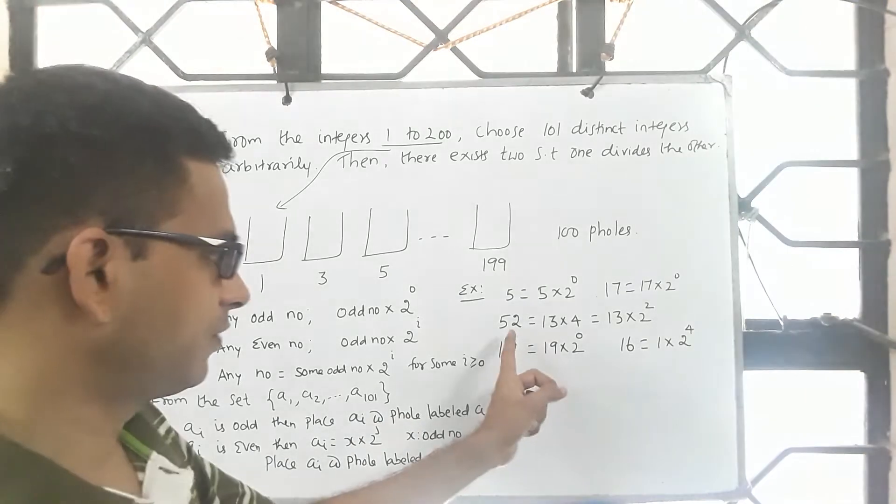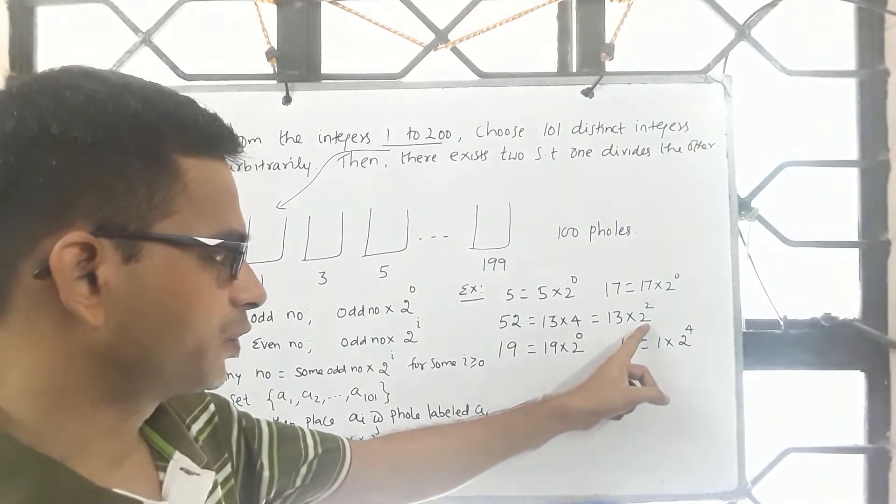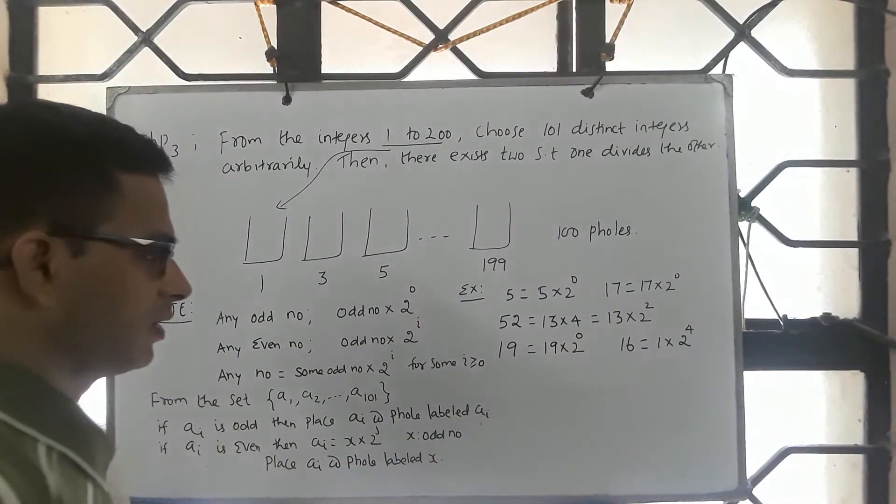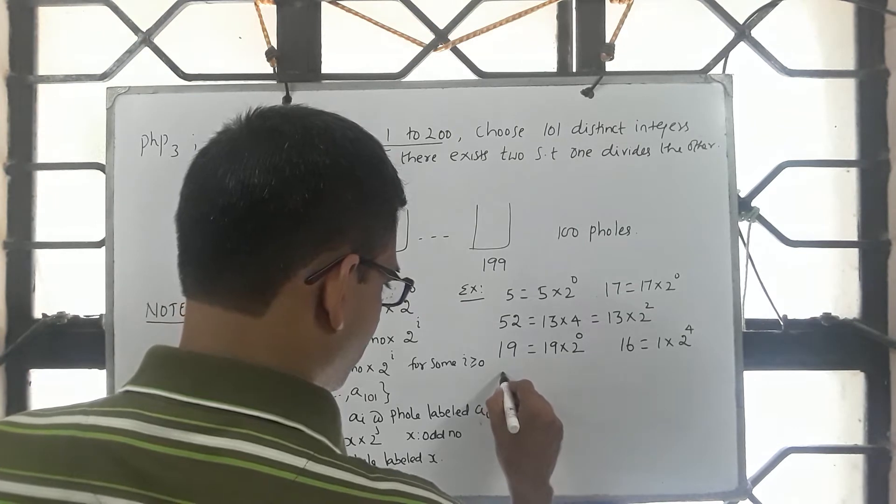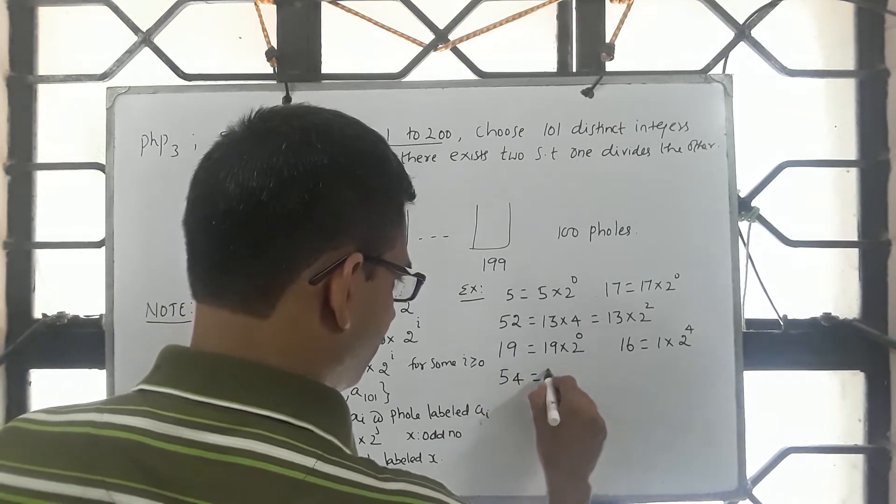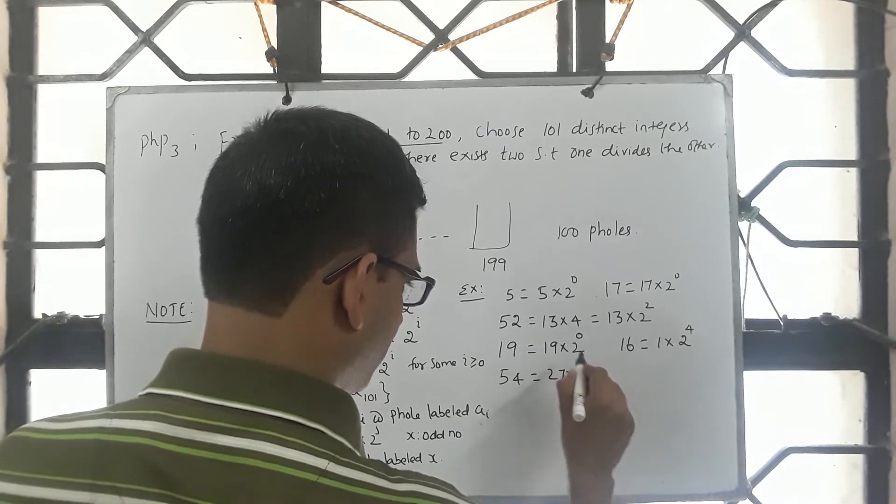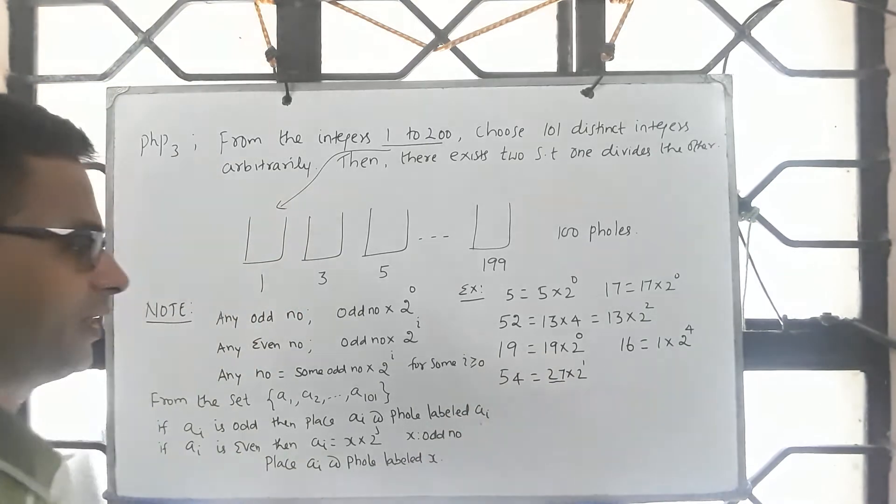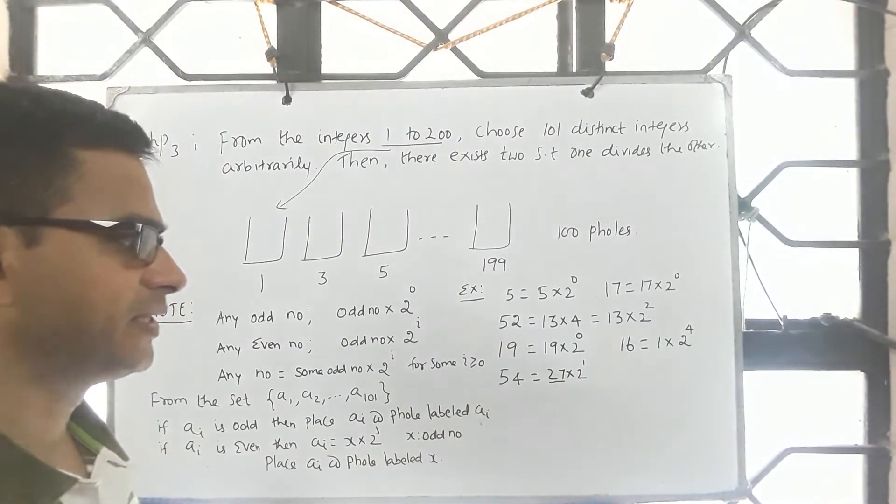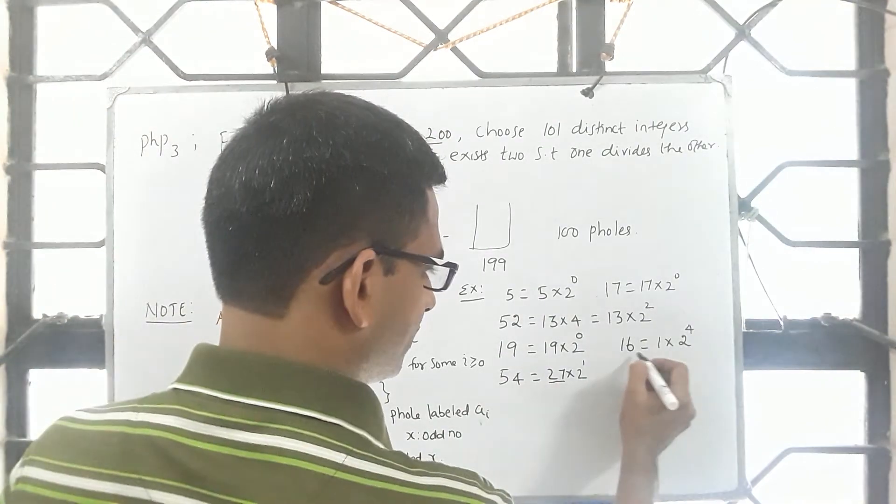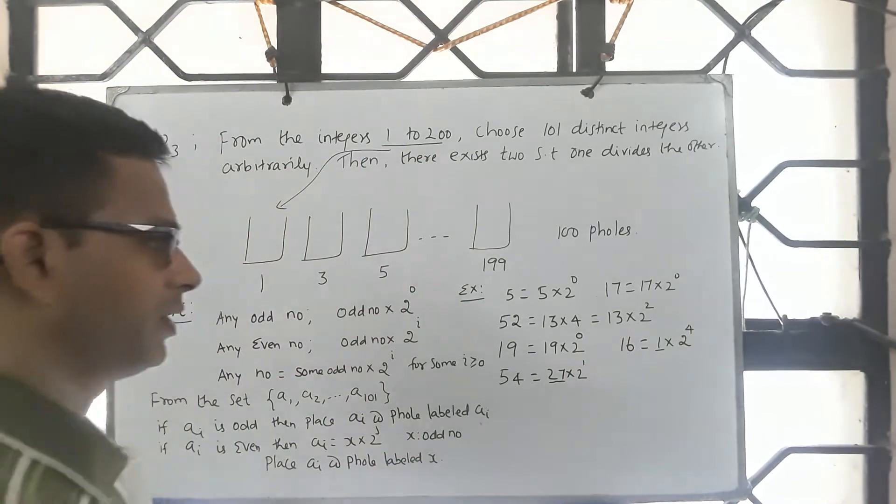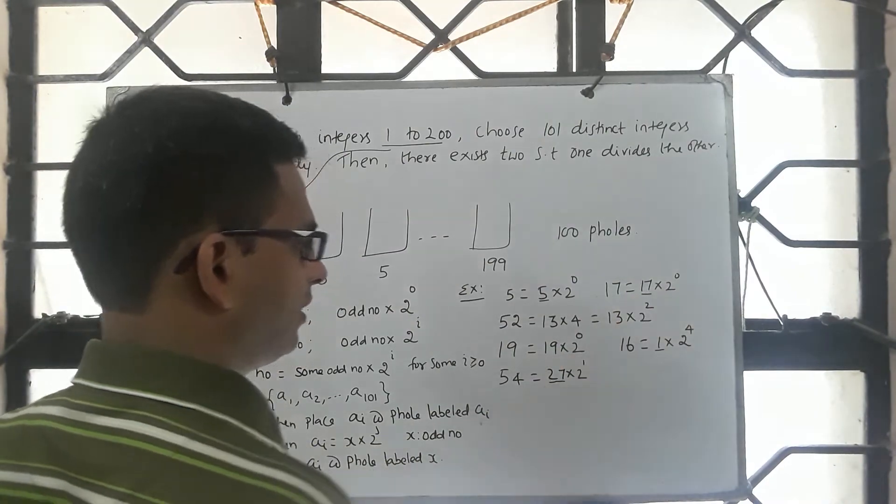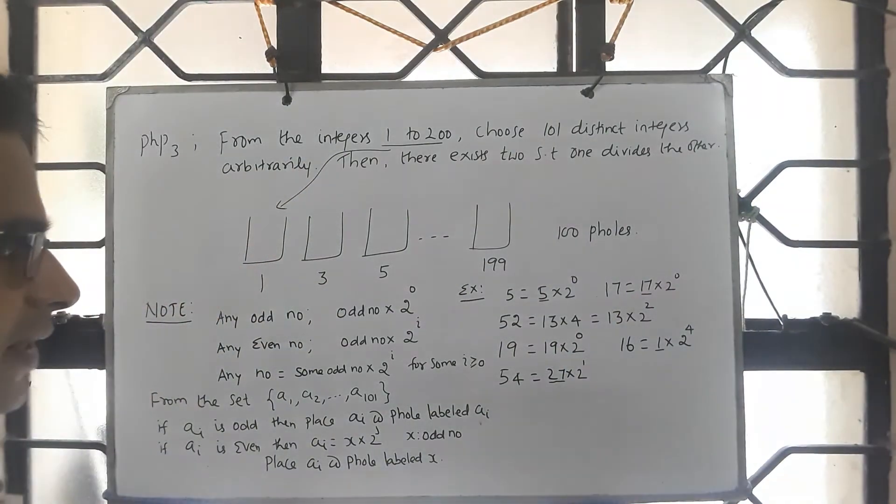Suppose it is 52, it is 13 into 2 square, you place 52 in box labeled 13. And suppose you want to place say 54, 54 is 27 into 2 power 1, you place 54 at this label, you place them in the box labeled 27. Where will you place 16? 16 will be placed in box labeled 1, and 5 will be placed in 5 itself, 17 will be placed in 17, 19 will be placed in 19 and so on.